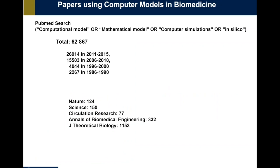I did a quick search in PubMed using the terms computational model, mathematical model, computer simulations, and in silico, and a total of over 62,000 papers came out. You can see here how many papers were published using those terms in each of these five-year periods, and there is a huge increase in the number of papers — you can see that it's becoming a trend to use this in computational biomedicine.